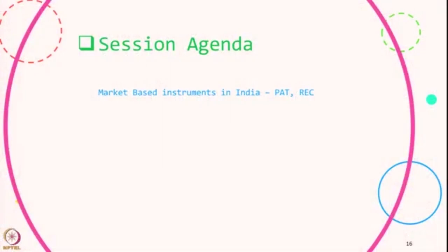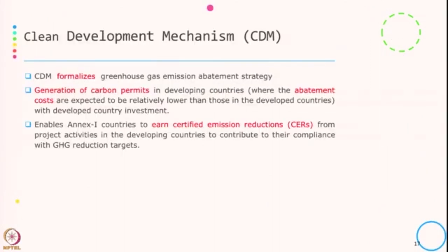Welcome back to the session on Environmental Regulation and Instrument. In the last session we discussed the difference between the command and control approaches and the market based instrument, and we saw the different types of emission trading schemes, how they work, and we were discussing about the Clean Development Mechanism. In this session we will discuss the market based instruments existing in India — one is PAT and the second one is REC — but before that we will complete our discussion on Clean Development Mechanism.